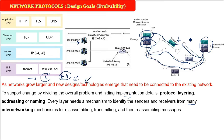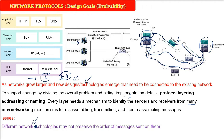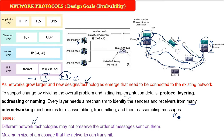Inter-networking has certain challenges because different network technologies may not preserve packet order - you might send 1, 2, 3 but receive 3, 1, 2, so sequence numbers are needed. Every network also has a limited size; for example, if a message is 1 MB but the network can only send 500 KB, you must divide the message and add headers.